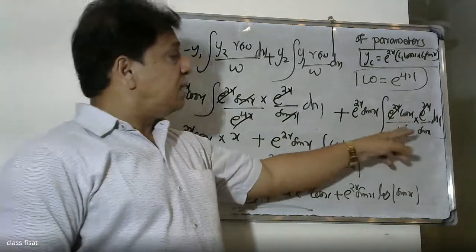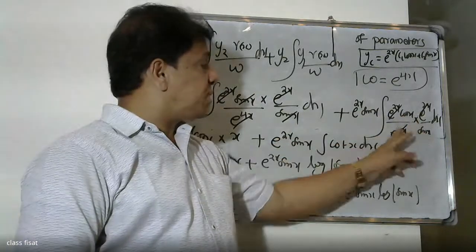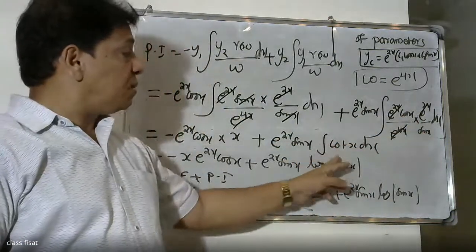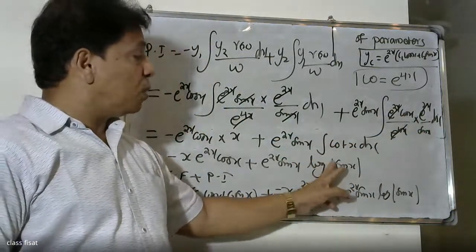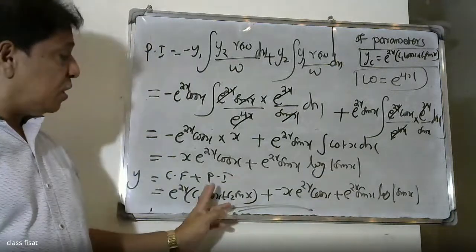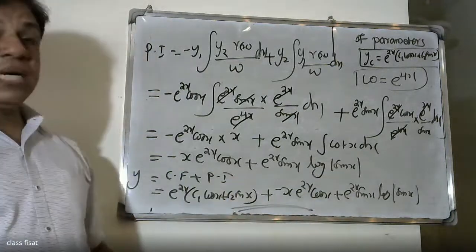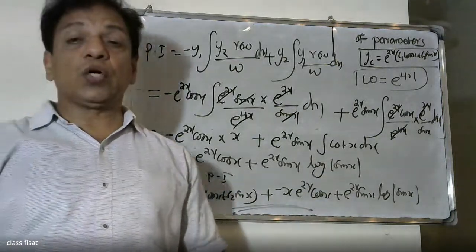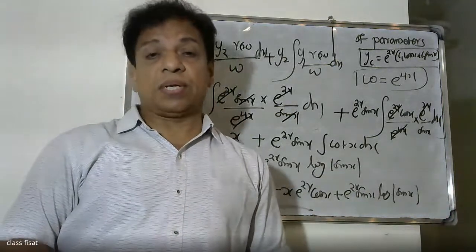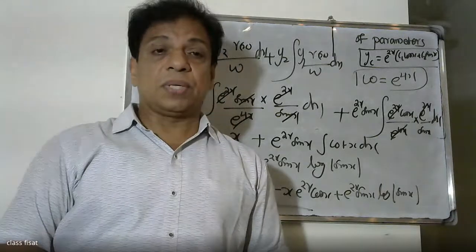In the second case, cos x / sin x is cot x. Therefore the final answer is y = complementary function + particular integral. This completes the solution by the method of variation of parameters.